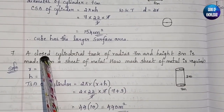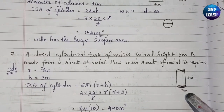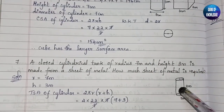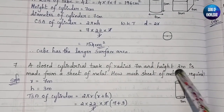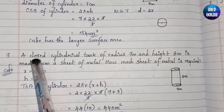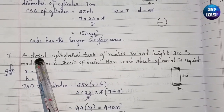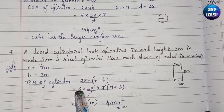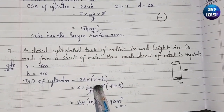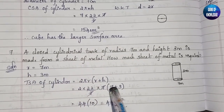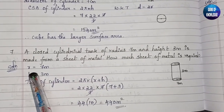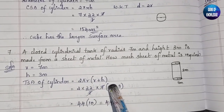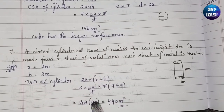We use TSA because the problem states it is a closed cylinder, meaning it has a top and bottom. If it were open, we would use only the curved surface area. Substituting: 2 × (22/7) × 7 × (7 + 3). The 7s cancel, giving 22 × 2 = 44, and 7 + 3 = 10. So 44 × 10 = 440 m².